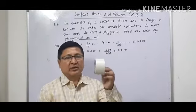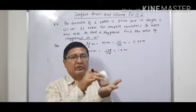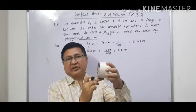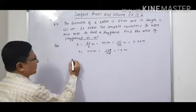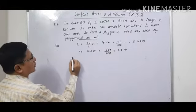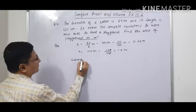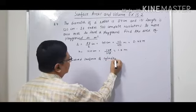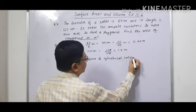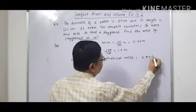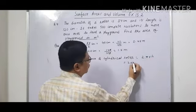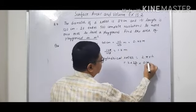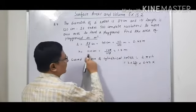It takes 500 complete revolutions. Now in one revolution, this is a shape of the cylindrical roller, and when it rolls once, it is covering its curved surface area. So first we will find the curved surface area of the cylindrical roller. The formula we know is 2πrh, that is 2 into 22 upon 7 into r. Radius is 0.42 meter and height is 1.2 meter.